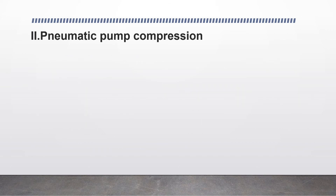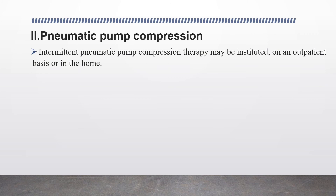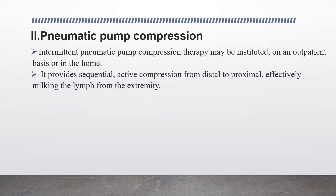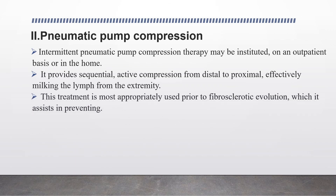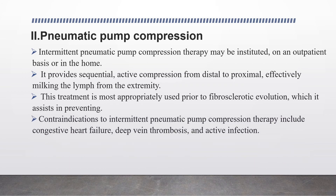Another management technique is pneumatic pump compression. Intermittent pneumatic pump compression therapy may be instituted on an outpatient basis or in the home. It provides sequential, active compression from distal to proximal, effectively milking the lymph from the extremities. This treatment is most appropriately used prior to fibrosclerotic evolution, which it assists in preventing. Contraindications to intermittent pneumatic pump compression include congestive heart failure, deep venous thrombosis, and active infection.